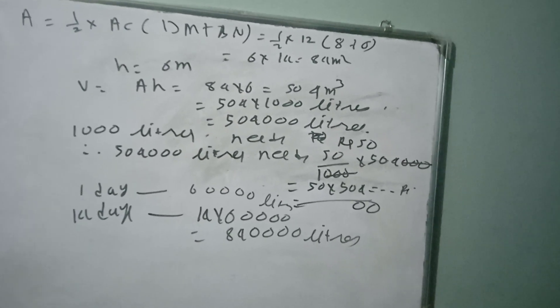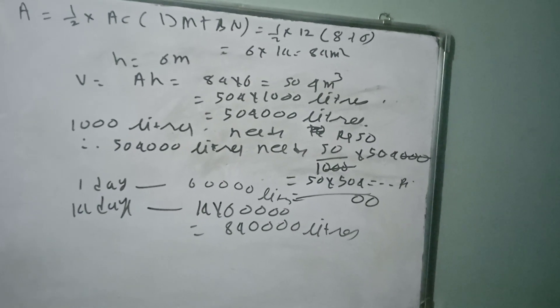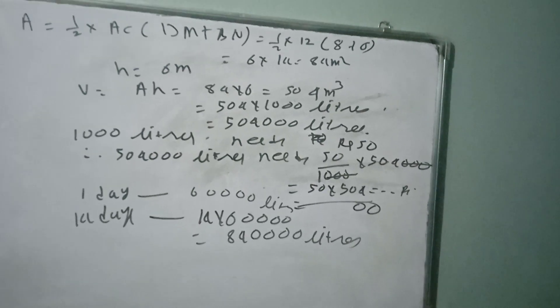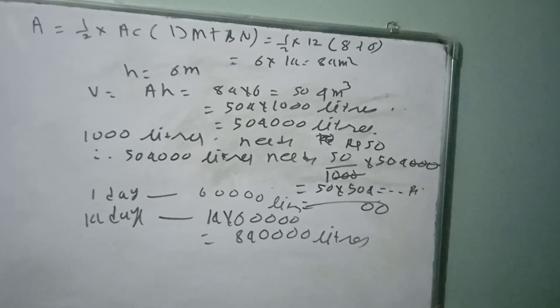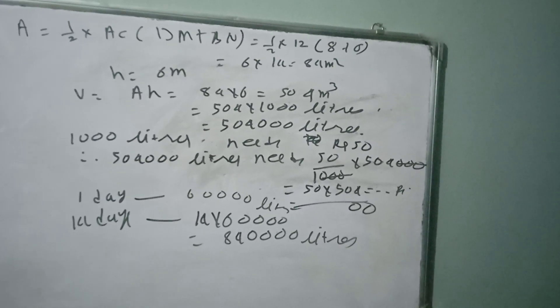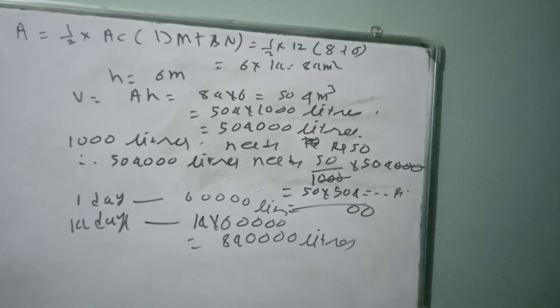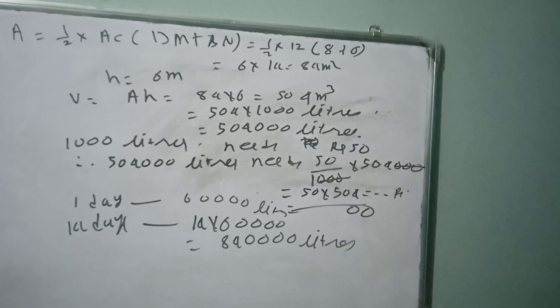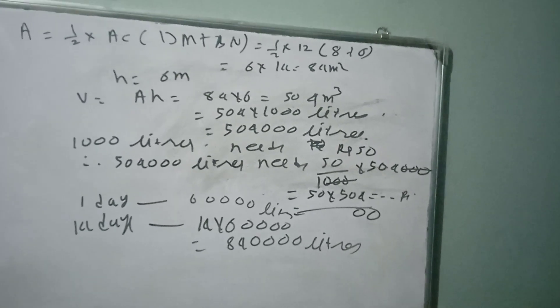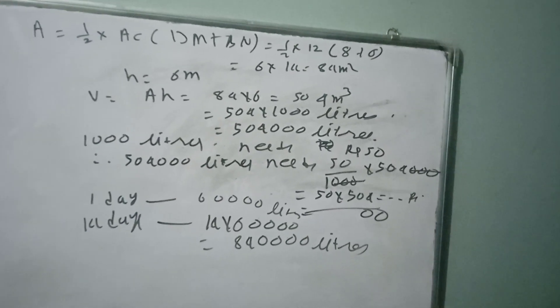60,000 liters. 1 day needs 60,000 liters of water. So for 14 days, 14 x 60,000 litres of water is needed for 14 days.